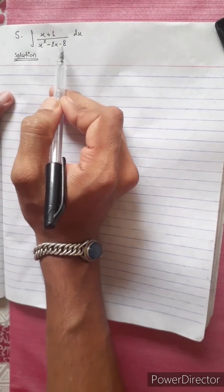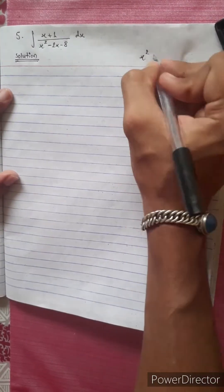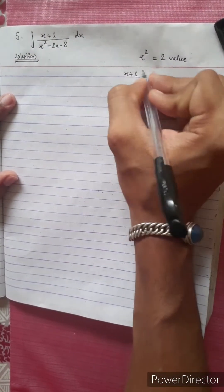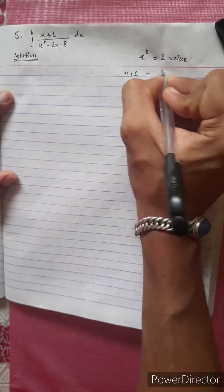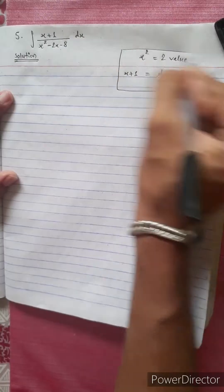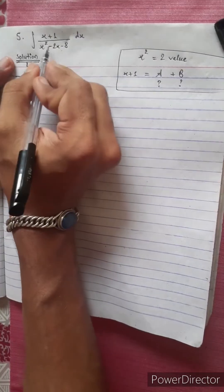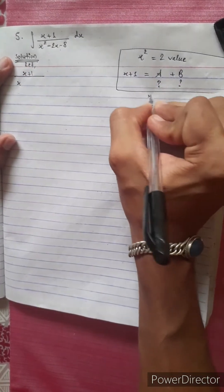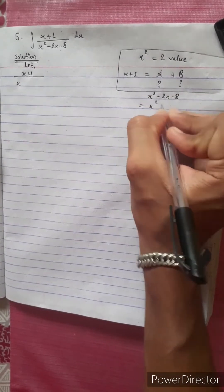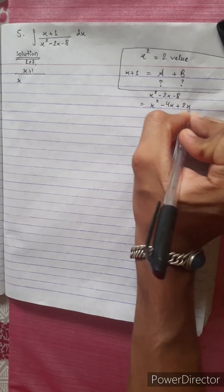We have x squared minus 2x minus 8. This is degree 2 in x. The numerator is x plus 1. We need to express x plus 1 over x squared minus 2x minus 8 using partial fractions. The denominator x squared minus 2x minus 8 can be rewritten as x squared minus 4x plus 2x minus 8.